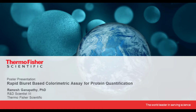The Rapid Gold BCA is compatible with detergents — you can use any detergents up to 5%, for example 5% SDS. It's compatible with most lysis buffers. However, it is not compatible with reducing agents. If you have reducing agents in your sample, you need to remove them first or use another assay. We also have a reducing agent compatible BCA assay, so you could opt for that if you have reducing agents such as DTT or TCEP in your samples.